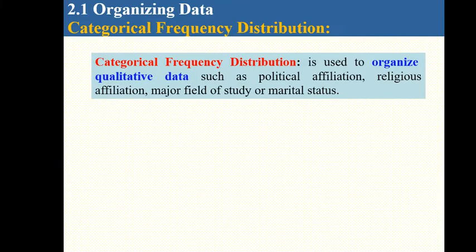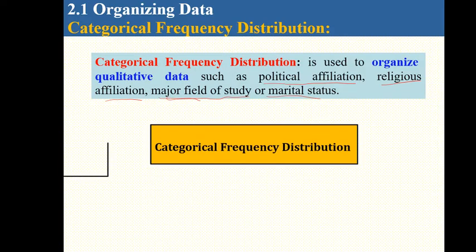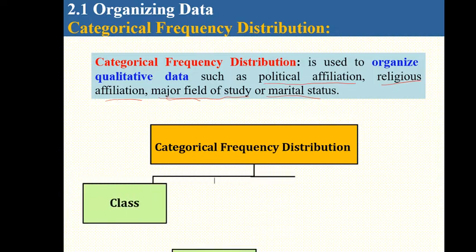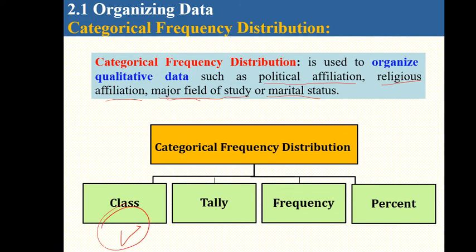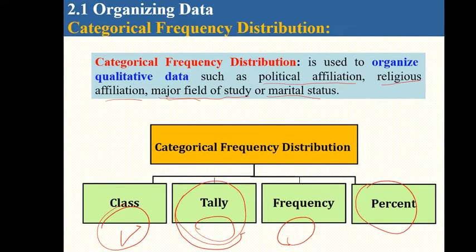For categorical distribution, examples include blood type, political affiliation, religious affiliation, gender, major field of study, or marital status. In categorical frequency distribution, we find the class, make tallies, and calculate percent.